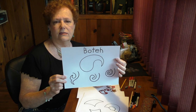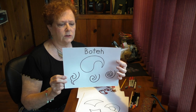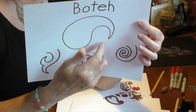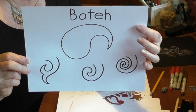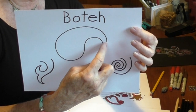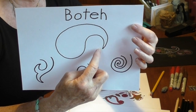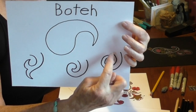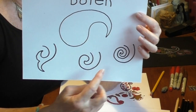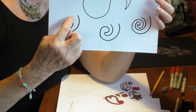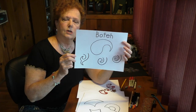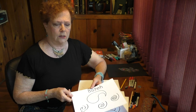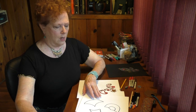The cool thing is there are so many different ways you can create the bota. It always has this sort of shape — almost half of a yin yang shape. But at the end of it, you can do all kinds of different things. You can make a round circle at the end, a spiral at the end, or a fishtail at the end. There are all kinds of ways to incorporate the bota design.